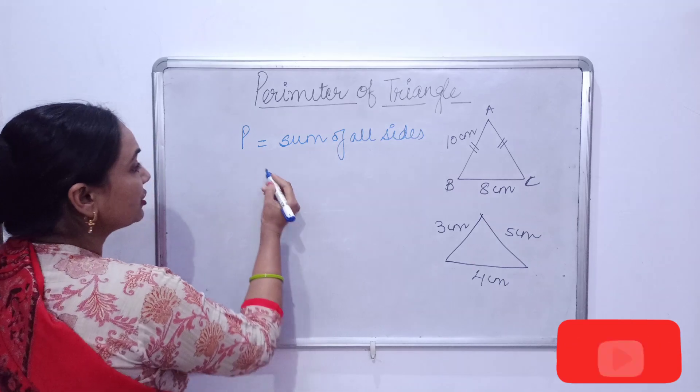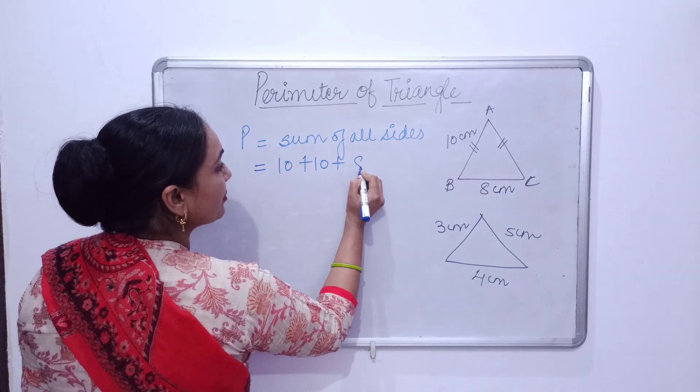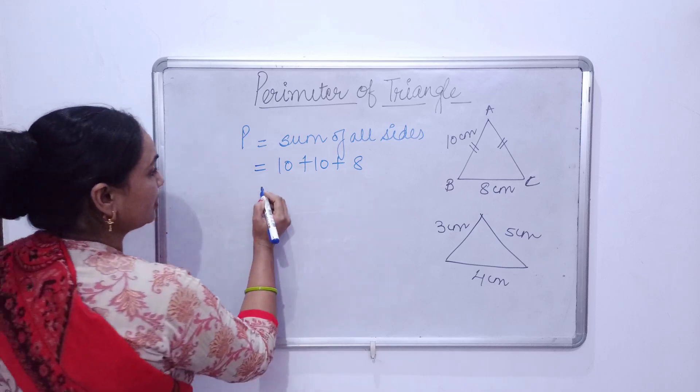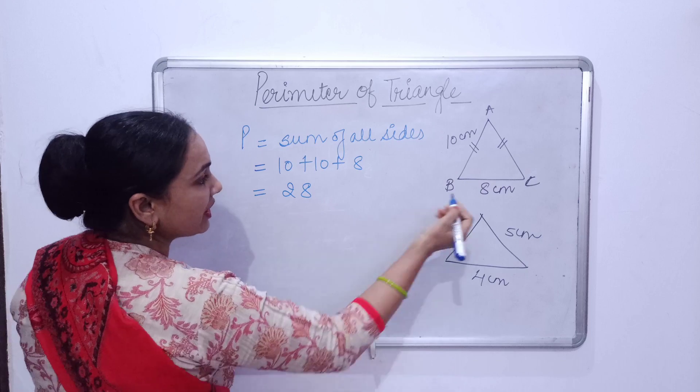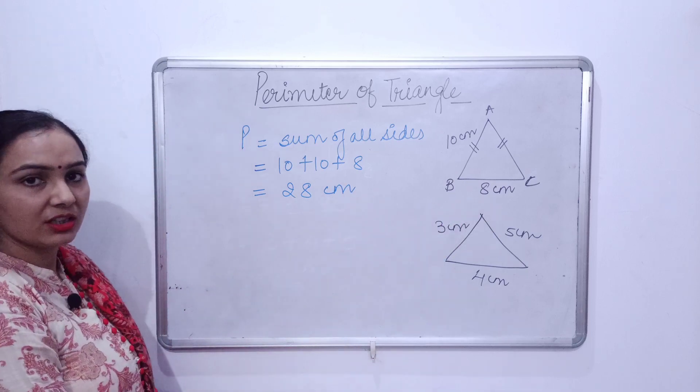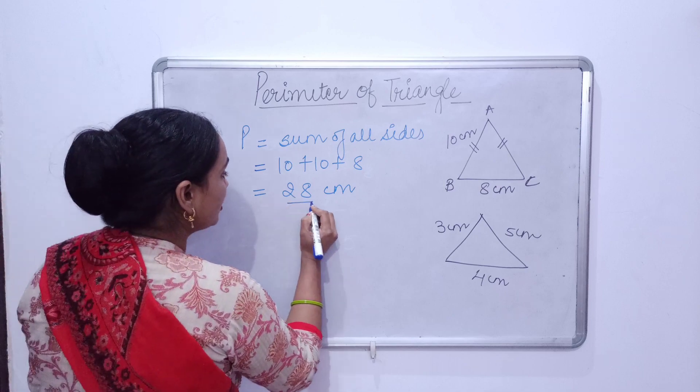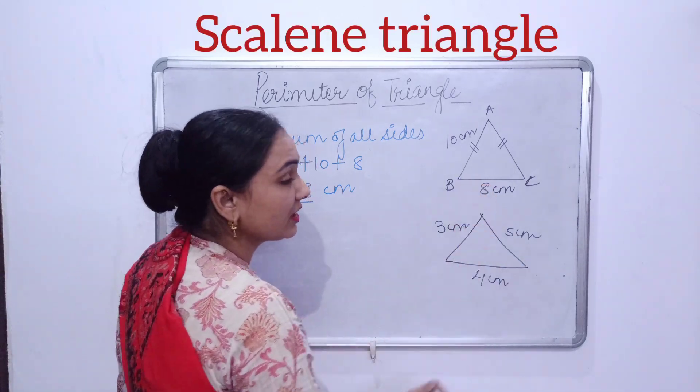Now let's find out the perimeter. Here I have already written that the perimeter is equal to sum of all sides, so we'll add up: 10 plus 10 plus 8. So it will be 28, and as the unit is given in centimeter, we'll write centimeter.